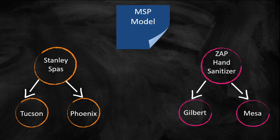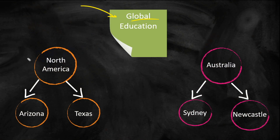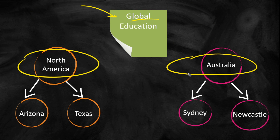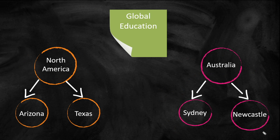The other model could be an enterprise model. Instead of being an MSP, we now have Global Education, the worldwide provider of education services. They have offices — and now regions sound more like it — in North America and Australia, with Sydney and Newcastle as sub-regions. Then the individual sites, same as the MSP model, could be sites or sub-regions. You can nest regions within regions within regions.